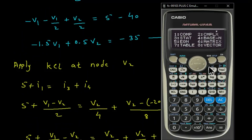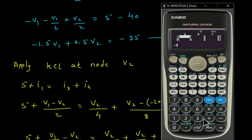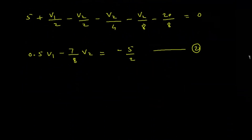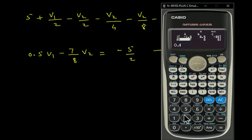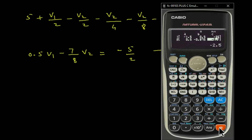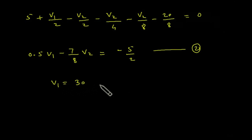Solving equations 1 and 2 simultaneously using the matrix form: [minus 1.5, 0.5; 0.5, minus 7/8] with constants [minus 35, minus 5/2], we get V1 equals 30 volts and V2 equals 20 volts.